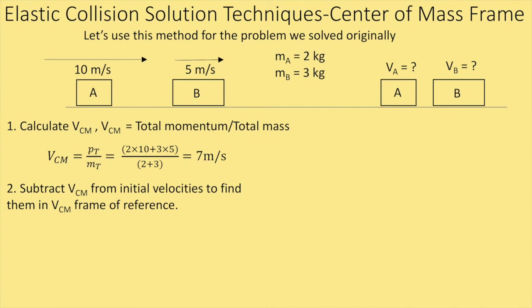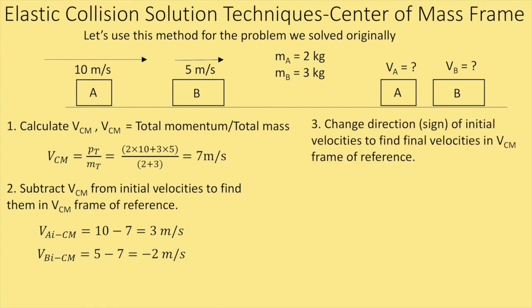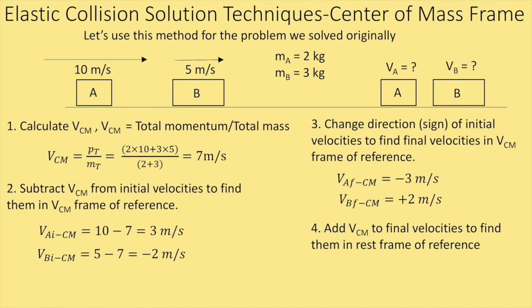Step two: enter the CM frame. V_A initial (CM frame) = +3 m/s; V_B initial (CM frame) = −2 m/s. Step three: change the sign to get final velocities. V_A final (CM frame) = −3 m/s; V_B final (CM frame) = +2 m/s. Step four: add V_CM = 7 back to convert to the rest frame. V_A final = −3 + 7 = 4 m/s; V_B final = +2 + 7 = 9 m/s. These match the results from the first method exactly.